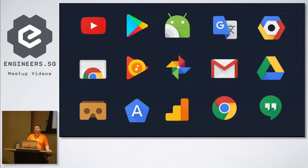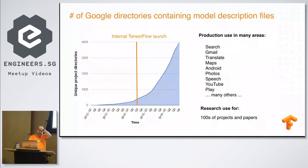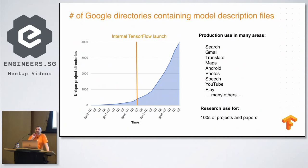Pretty much all of Google's products now contain some form of machine learning or deep learning. There's a slide showing the number of repositories inside Google that have machine learning, deep learning, or TensorFlow — it's well over 6,000 now, getting close to 7,000 or more.